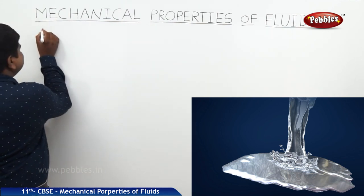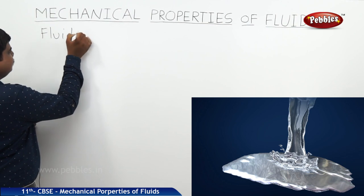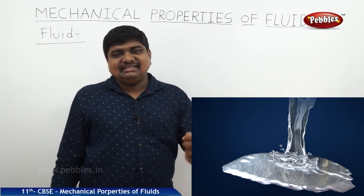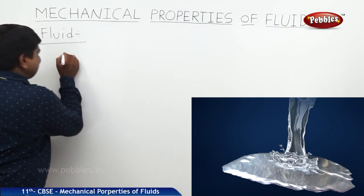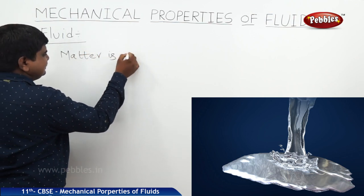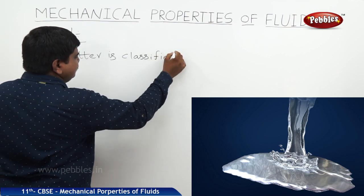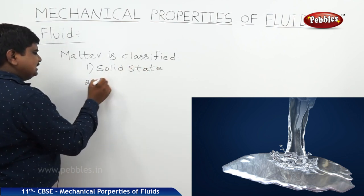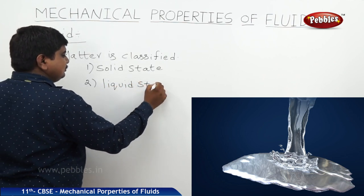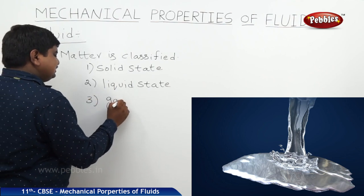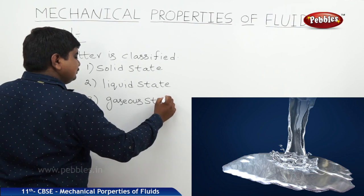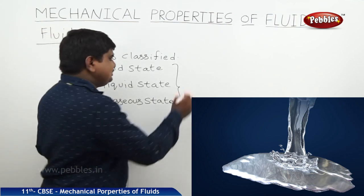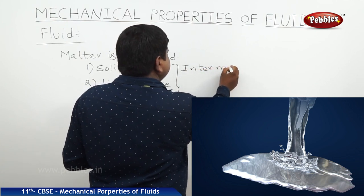First of all, what is the definition of fluid? Before going to check the definition of fluid, we should go to the classification of matter on the basis of the intermolecular distances. The matter is classified into three types: solid state, liquid state, and gaseous state. These three are classified on the basis of intermolecular gap, or intermolecular distance.